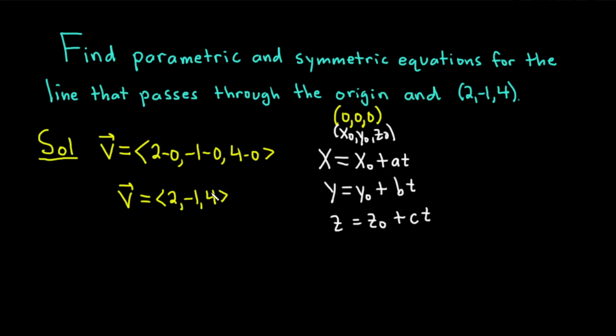And the a, b, and c, those are the components of our vector. Our a is going to be 2, our b is going to be negative 1, and our c is 4.